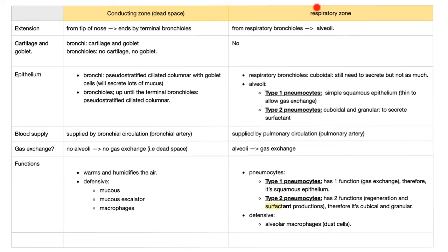So conducting zone, which is a dead space because there is no gas exchange, and then respiratory zone. Conducting zone from the tip of the nose all the way to the terminal bronchioles. So you have tip of the nose, then you have the nasopharynx, then you have the larynx, and then after the larynx, you have the trachea, the two main stem bronchi. After bronchi, you have bronchioles all the way to the terminal bronchioles. Respiratory zone from the respiratory bronchioles all the way to the alveolar duct, alveolar sac, and alveoli. So conducting zone terminates with the terminal bronchioles. Respiratory zone starts with the respiratory bronchioles.